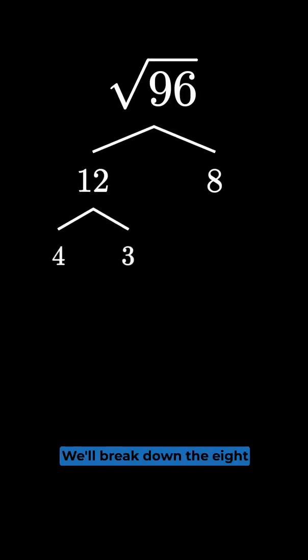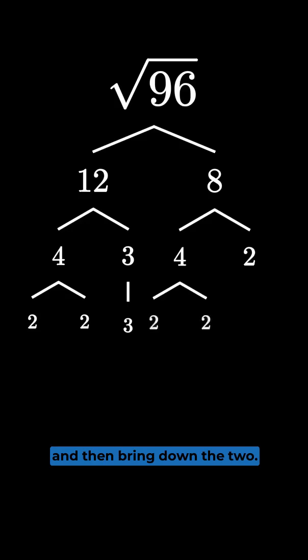So we'll break down 12 to become 4 and 3. We'll break down the 8 to become 4 and 2. And then we'll break down the 4 to become 2 and 2, and then bring down the 3. And then we'll break down this 4 to become 2 and 2, and then break down the 2.